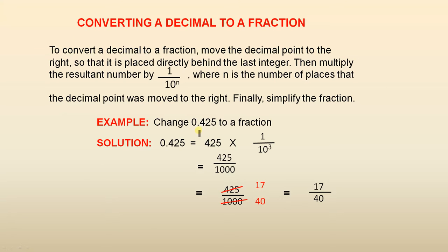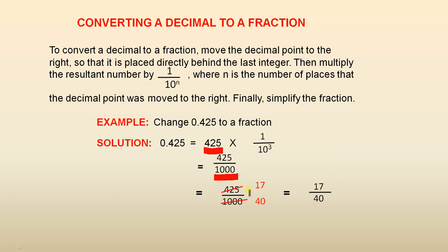To change 0.425 to a fraction, move the decimal point three places to the right to get 425. The rule says you multiply this by 1 over 10 to the power of 3, because we moved the decimal point three places to the right. The answer is 425 over 1,000, since 10 to the power of 3 is 1,000. Simplifying: 25 into 425 is 17, and 25 into 1,000 is 40, so the answer is 17 over 40.